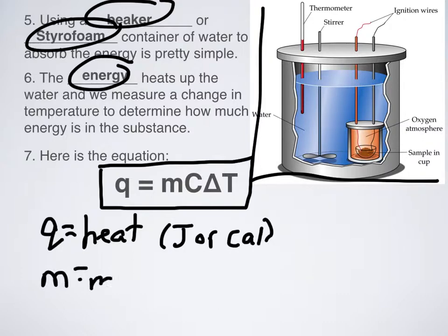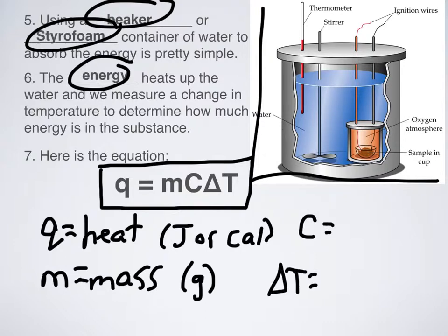M is mass, and that is measured in grams. C we'll talk about in a second. But I want to talk about delta T. So delta T is the temperature change. So how much does your temperature actually change? And of course, that is going to be measured in degrees Celsius.